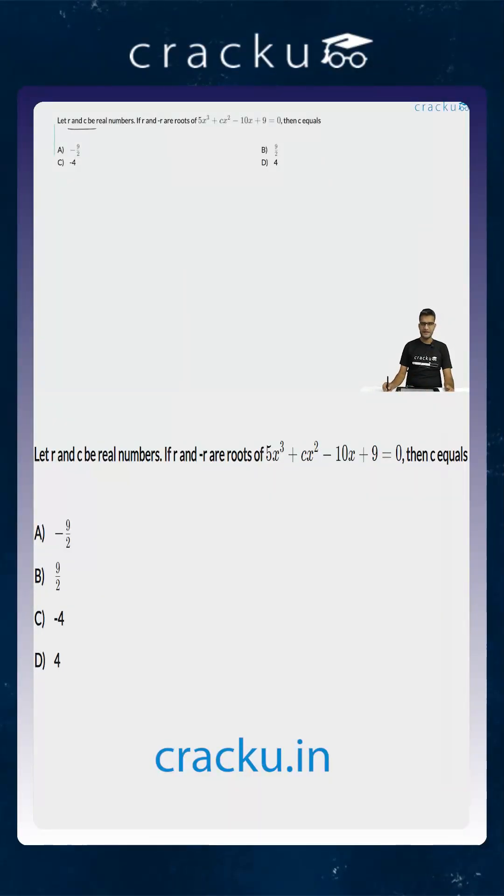In this question we are told that R and C are real numbers, and that R and minus R are roots of 5x³ + 6Cx² - 10x + 9. We are required to calculate the value of C.